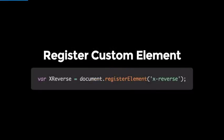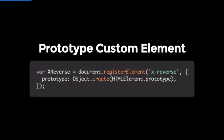To register a custom element, there's an imperative API: document has a new method called registerElement. You pass a string of your element name, and then you set a prototype — the recommendation is to use HTMLElement.prototype so it inherits all the properties of an existing element. After that you can just use x-reverse on your page.